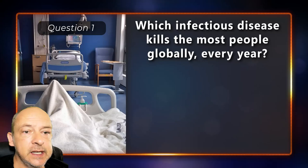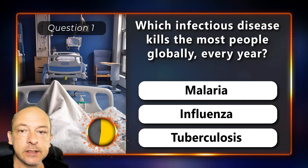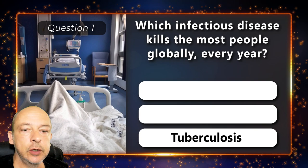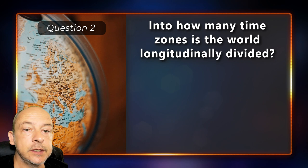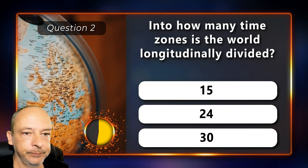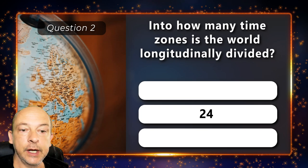Which infectious disease kills the most people globally every year — malaria, influenza or tuberculosis? The correct answer is tuberculosis. Into how many time zones is the world longitudinally divided — 15, 24 or 30? The correct answer is 24.